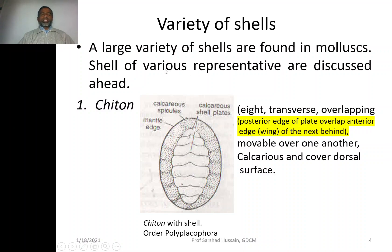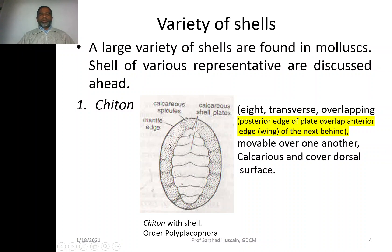For example, in Chiton, the shell is made up of eight calcareous shell plates composed of calcium carbonate. Around them you may have calcareous spicules and the mantle edge. Looking at the shell plates, they are eight in number in Chiton. They are transverse, and every plate overlaps the other — they have an overlapping arrangement.